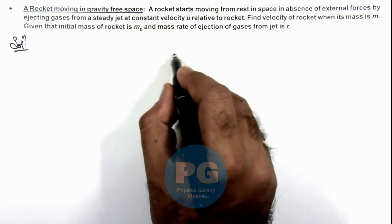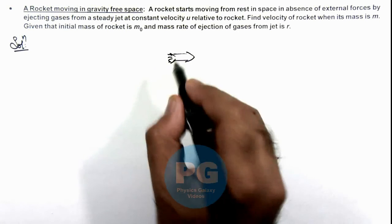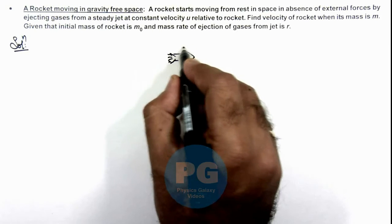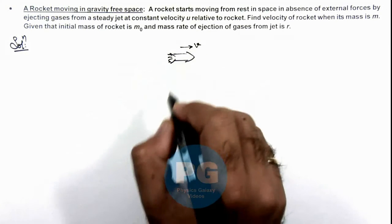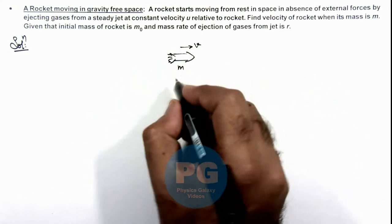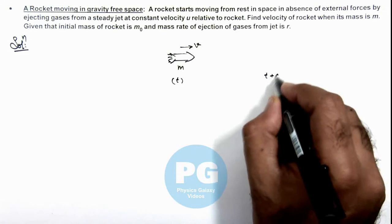Here we can consider if this is the rocket from which gases are ejecting out and say at any instant it is moving with the velocity v and say its mass is m. The very next moment say if this time is t then we can analyze it at time t plus dt.